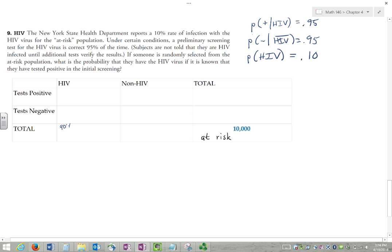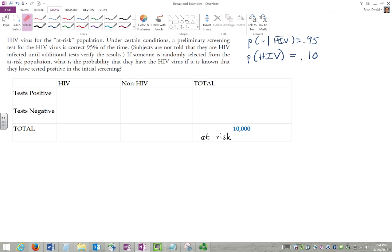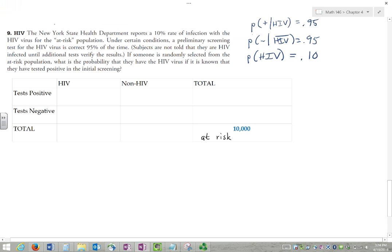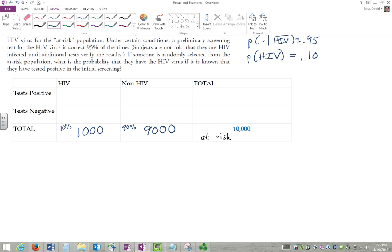So we know that of those 10,000, 10% have HIV, and 90% do not. So 10% of 10,000, and 90% of 10,000.